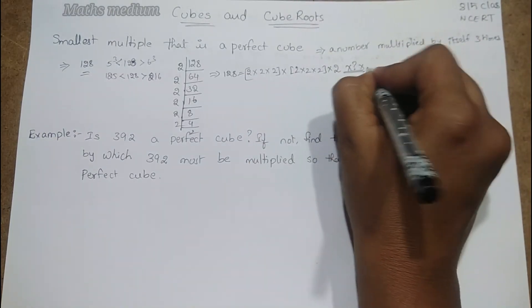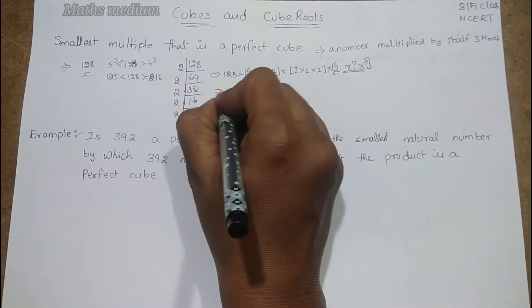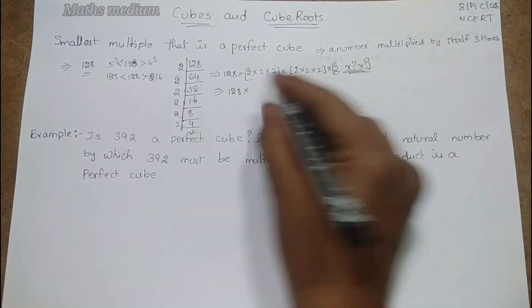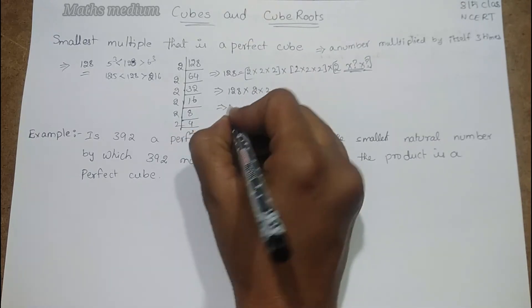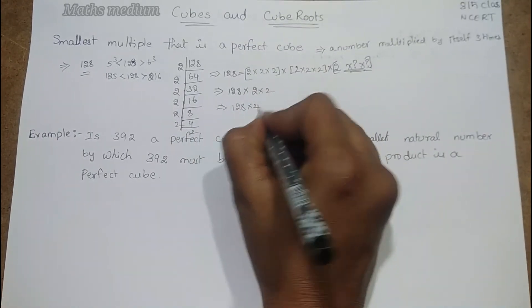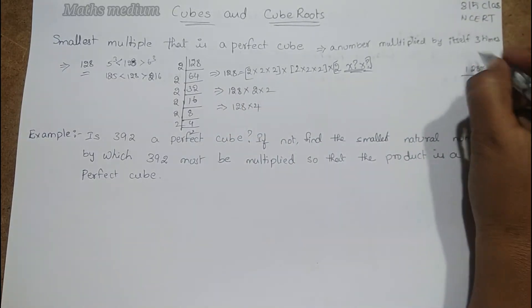There are empty spaces for two 2's, so we have to multiply this number 128 by these empty spaces filled with 2. Now 128 times 2 means 4, right? So 128 times 4.